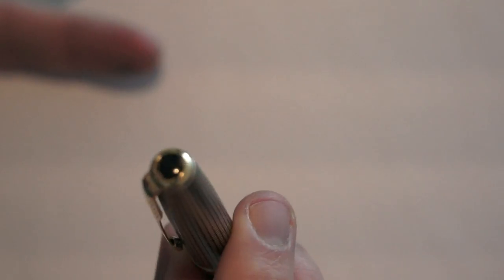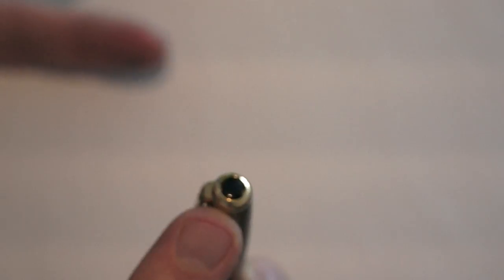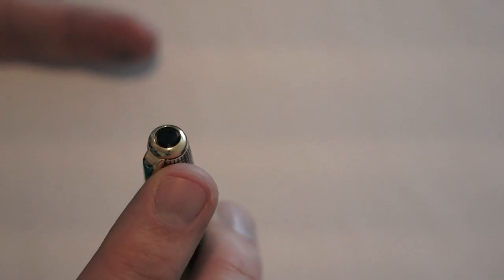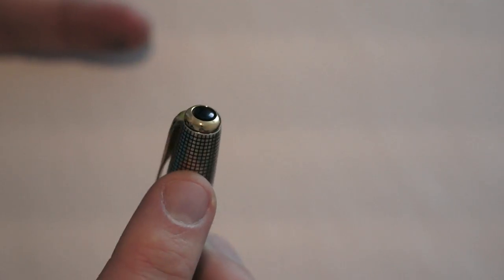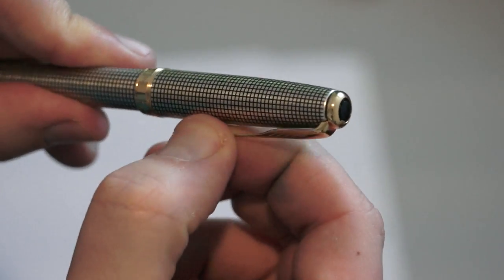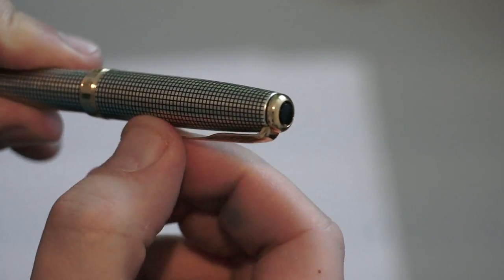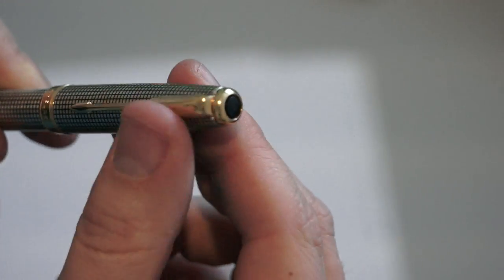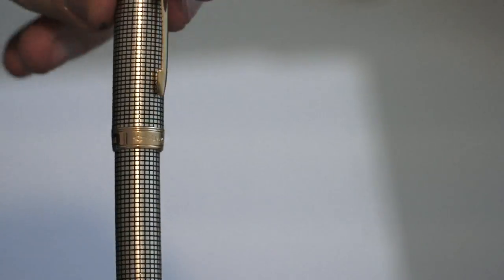Now the cap continues with the finial. The finial looks pretty much like a standard Parker finial with the black button here and the clip is fixed from this ring. It's a medium hard clip in strength but it's very usable. Very classic Parker clip which I had no problem so far with.